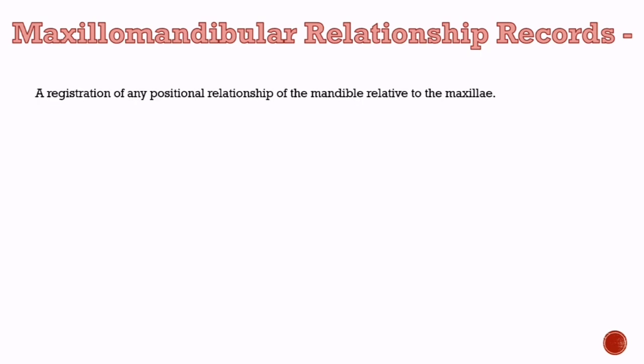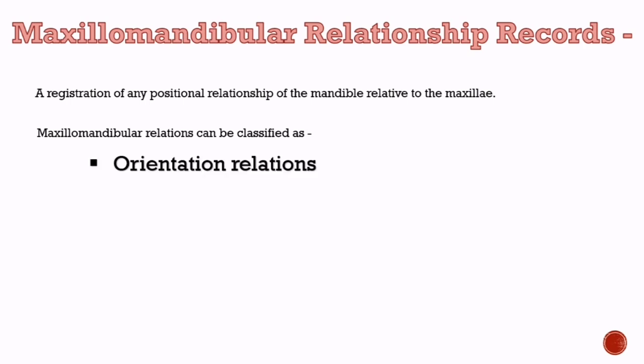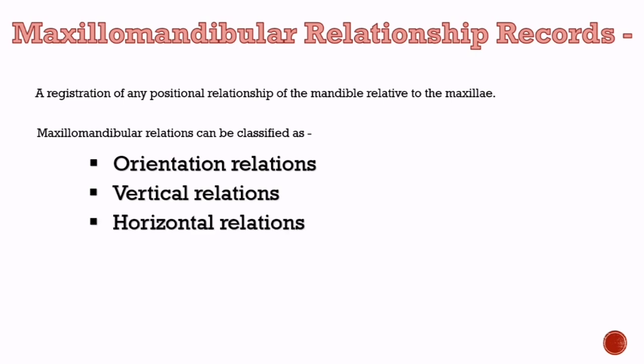Now, what is maxillomandibular relationship records? It is the registration of any positional relationship of the mandible related to the maxilla. Maxillomandibular relations can be classified as orientation relations, vertical relations, and horizontal relations.